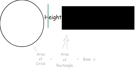So the area of the circle is equal to the area of the rectangle, which is equal to base times height. The height of the rectangle, as you can see, is the same as the radius. So height is equal to radius.